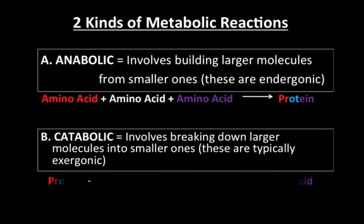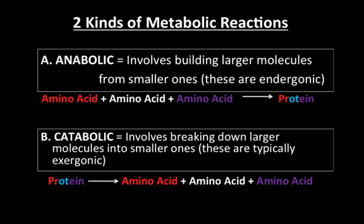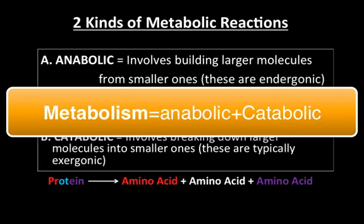The opposite of anabolic is catabolic. That's a metabolic reaction involving the breaking down of larger molecules into smaller ones. These are typically exergonic, meaning that they release energy. Taking a protein and breaking it down into its amino acids is an example of a catabolic reaction. So the sum of anabolic and catabolic reactions is metabolism.